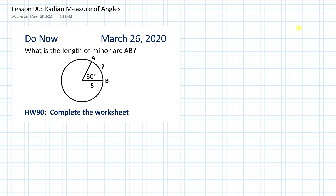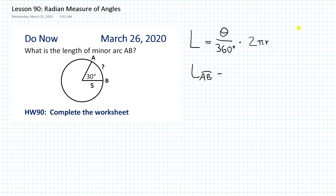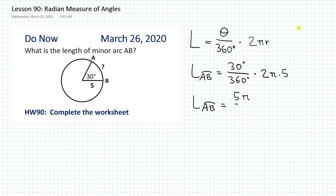According to the do now, we have a circle of radius 5 and a central angle of 30 degrees. What is the length of minor arc AB? Yesterday we learned that the arc length is equal to the central angle theta divided by 360 degrees, times 2πr. So the arc length from A to B is equal to 30 over 360 times 2π times 5, which gives us 5π over 6, approximately equal to 2.6.